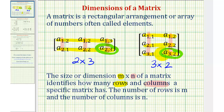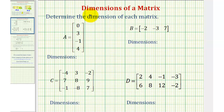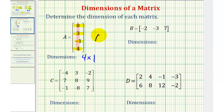Let's take a look at several more examples. We can see from these four examples, it's common to identify a matrix using a capital letter. So if we look at matrix A, notice how it has four rows and one column. Therefore, the dimensions would be four by one. We'll often write capital A with a subscript for the dimensions, which in this case would be four by one. And because this matrix has a single column, it can also be called a column matrix.